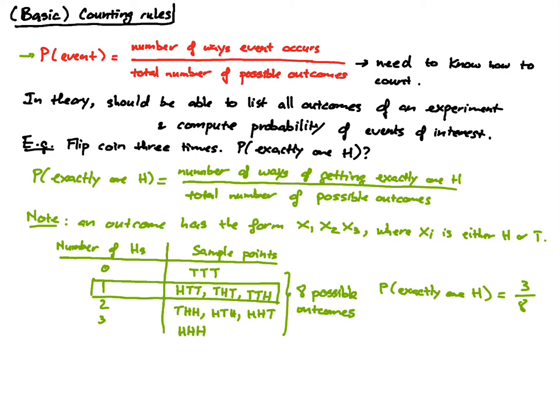There are three ways we can get exactly one head, so this is going to be three over eight. This is a fairly simple problem, but as the experiment becomes more complicated, listing out the outcomes is not only time consuming but also easy to make mistakes. So hopefully we can come up with another way to determine the number of outcomes — and that leads us to the counting rules.